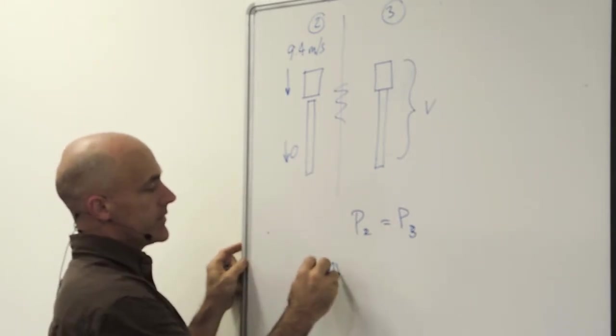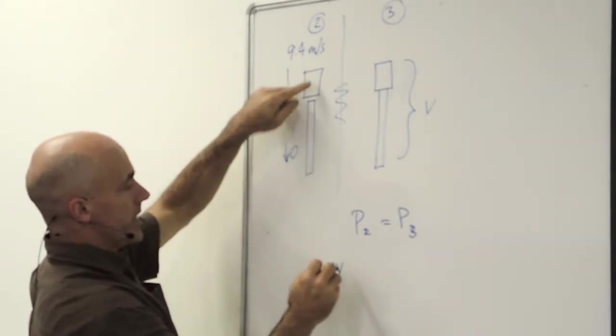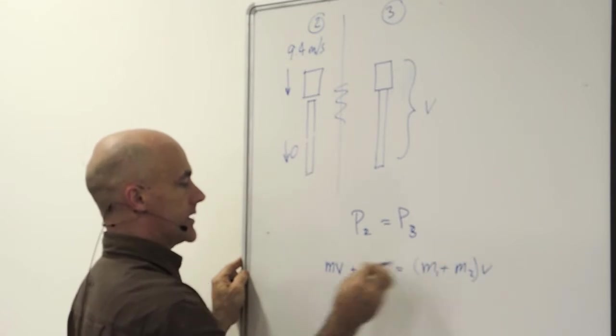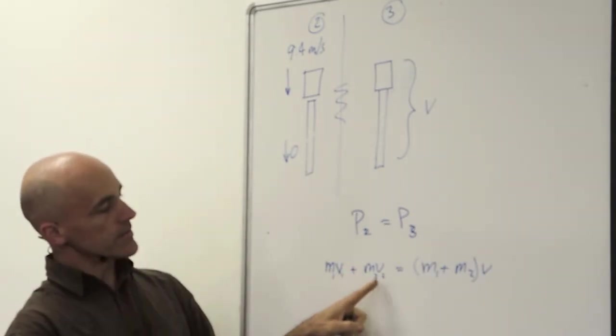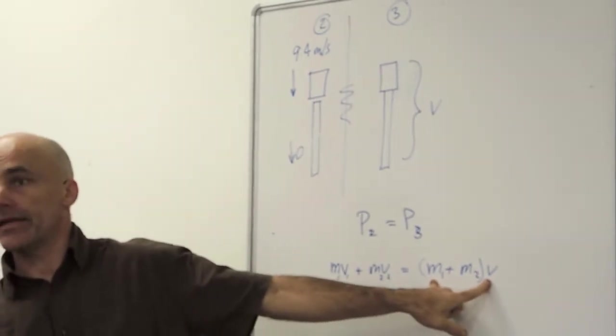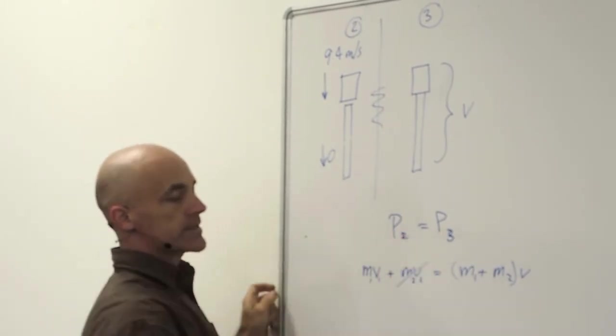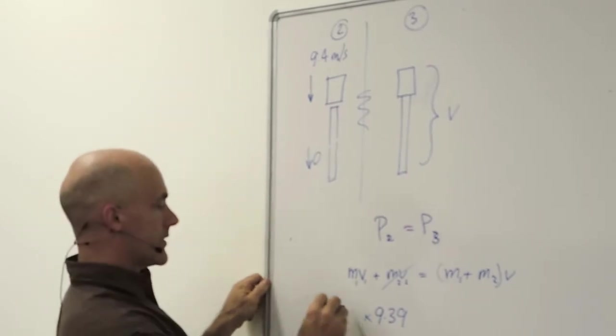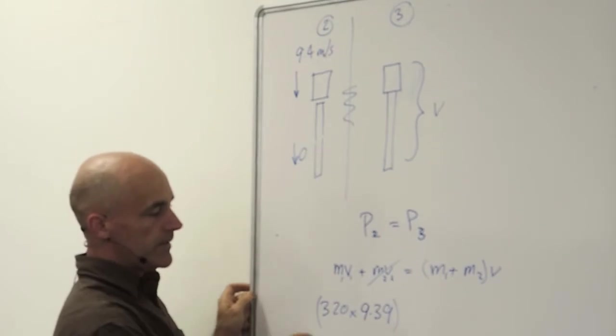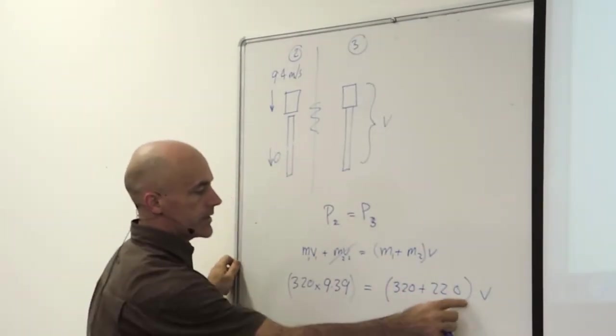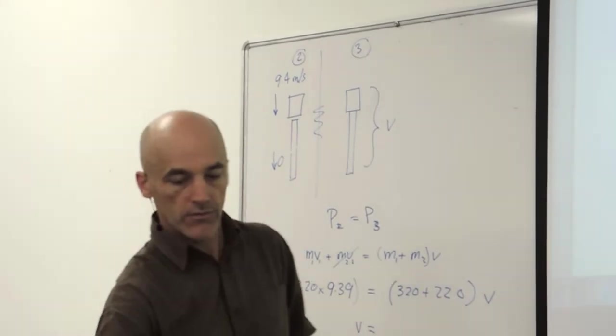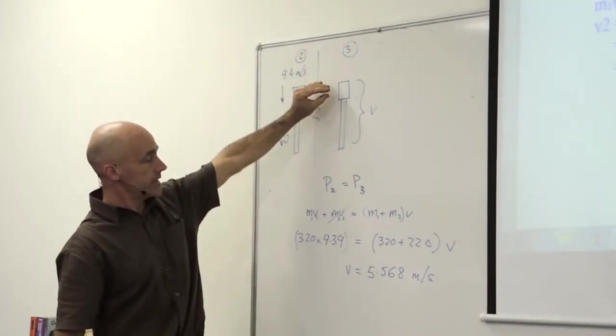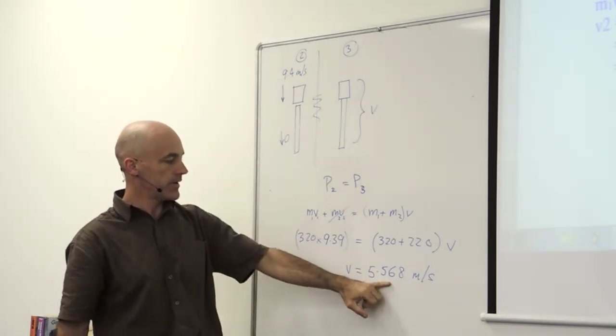P2 is mass times velocity. This is for that body plus mass times velocity for that, equals mass times velocity. The hammer plus the pile momentum equals the hammer and pile joined together momentum. The pile is starting off with velocity zero, so momentum to start with is 9.39 meters per second times the mass of 320. We can work out the velocity. The velocity after impact for the hammer and pile joined together is 5.56. It was going 9.4 meters per second. Once they hit and stick together, conservation of momentum requires that it must be going at 5 meters per second.